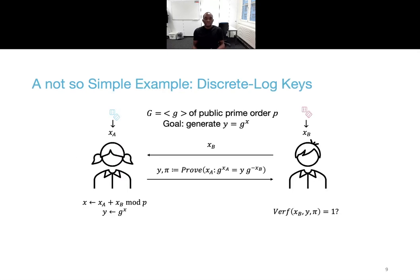To understand the difficulty of the problem, consider the simple case of generating discrete log keys in a group of prime order p. The natural idea would be to have Bob send his randomness xB to Alice, and Alice would simply compute the secret key as xB plus randomness xA modulo p. Alice would then compute and send back the public key y as g to the x, and she would also prove to Bob that she knows the other part of the secret key, and then Bob would simply verify the proof. The issue with this approach is that Alice could pick a specific value for the secret key after seeing Bob's value, and this would violate the third requirement.